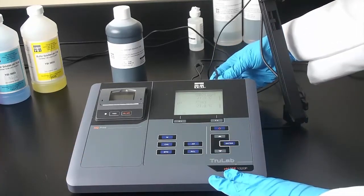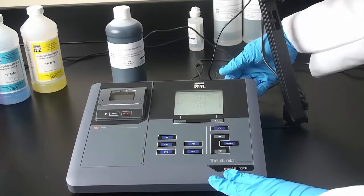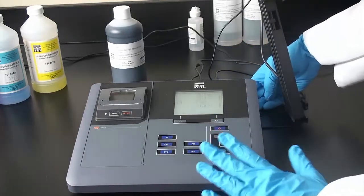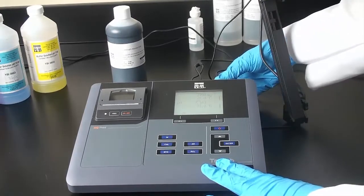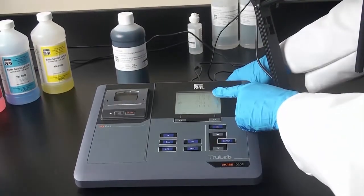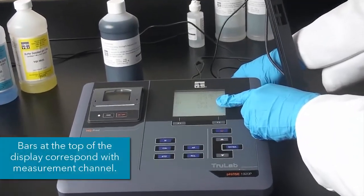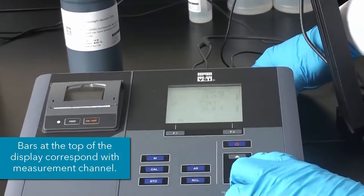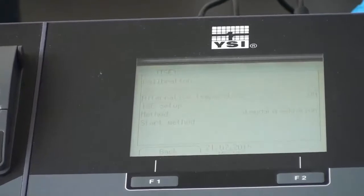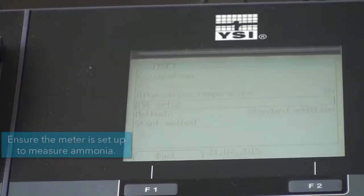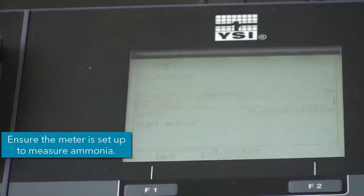But the first thing you'll do is connect it to the instrument, and then you'll want to go in and tell the instrument exactly what is connected to it. So as you can see here, I have an ISE and a pH electrode connected. So I will want to go in and set up this ISE to make sure that I am actually measuring ammonia and not calcium or any other ion, for example.